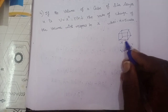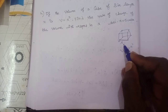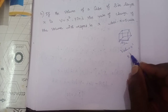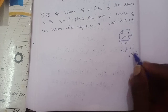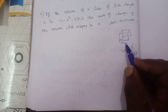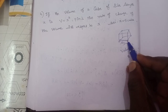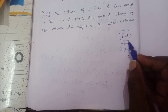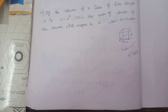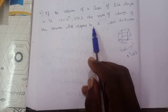The volume is x³. If the side is increased — for example, if the side is equal to 3 cm, then the volume is 3³ = 27. Suppose the side increases from 3 cm to 5 cm, so the volume changes. We need the rate of change of the volume with respect to x.